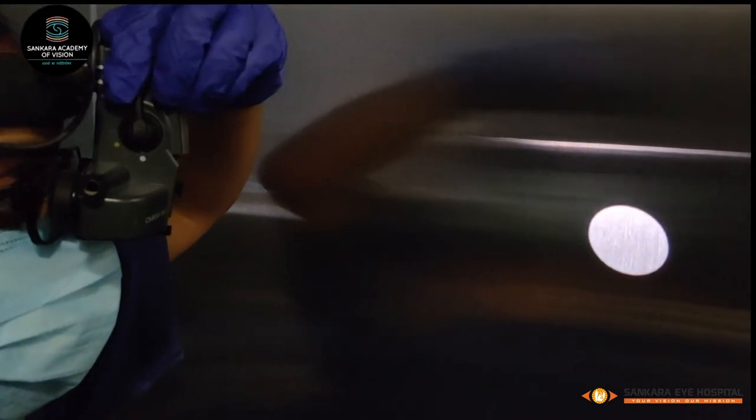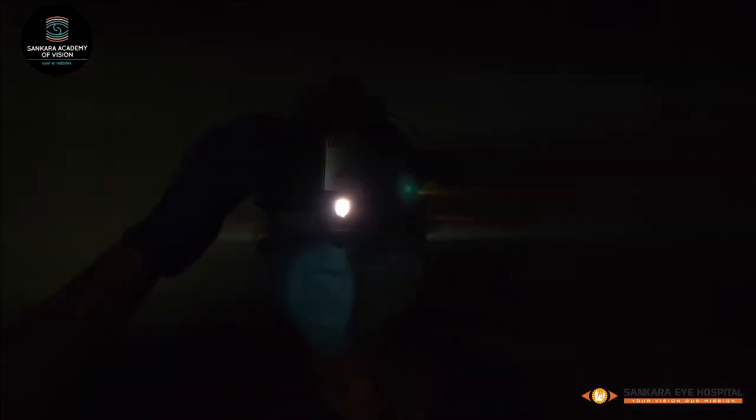Additionally, filters are incorporated into the viewing system. A red-free filter can be used to view blood vessels, membranes, and retinal nerve fiber layer defects. The red-free filter filters out the red light, and blood vessels are silhouetted against the green background.